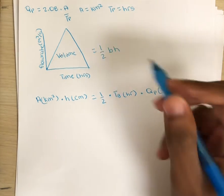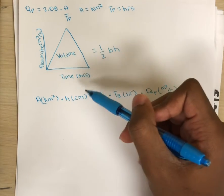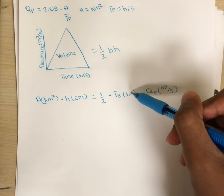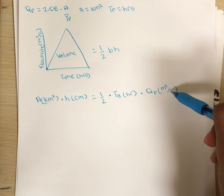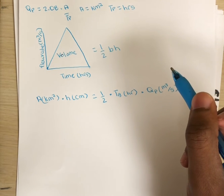So now we have kilometers squared, centimeters, hours, meters cubed per second. So let's simplify these units so that we can cancel them out.